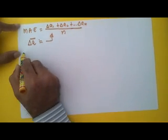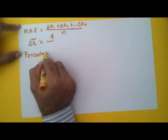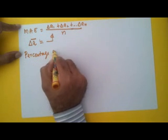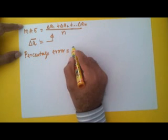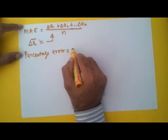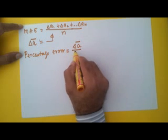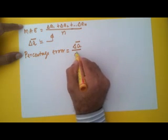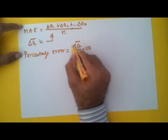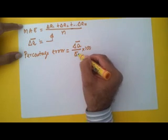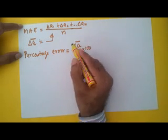There is one more thing we need to know: percentage error. Sometimes errors are given in terms of percentage error. The percentage error is given by delta a bar — that means the mean absolute error — divided by a bar, multiplied by 100. So mean absolute error divided by the true value, into 100, will give me the percentage error.